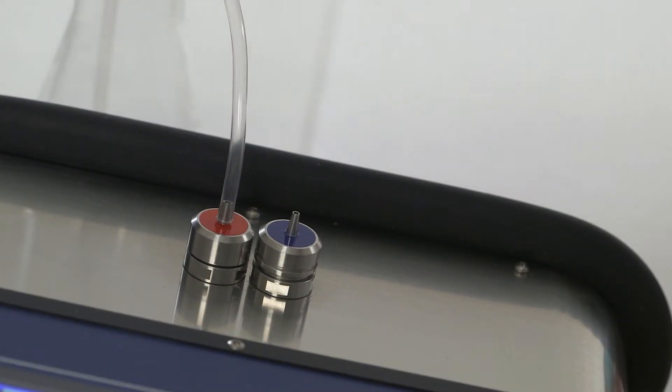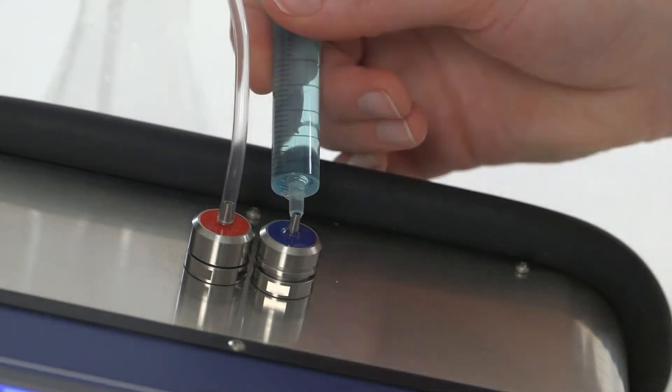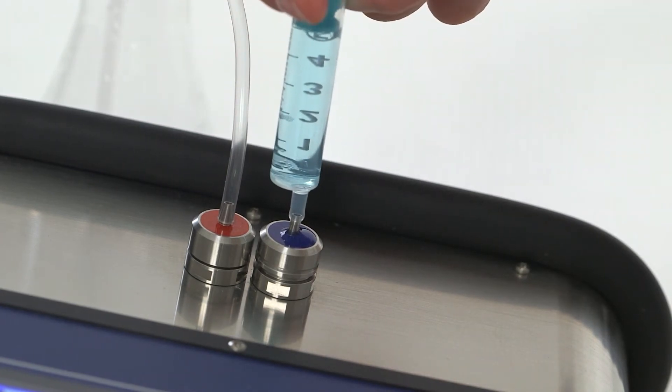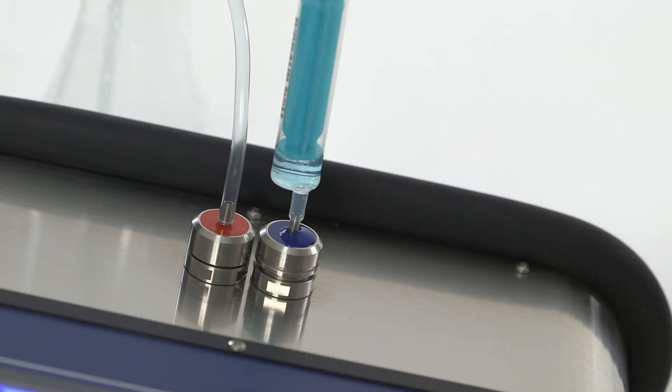Perform a zero check to zero set the instrument and validate linearity. Inject at least 5 milliliters of MERIS check, warmed to 40 degrees Celsius. Leave the syringe on the inlet and leave some of the solution in the syringe to prevent air entering the cuvette and causing false results.